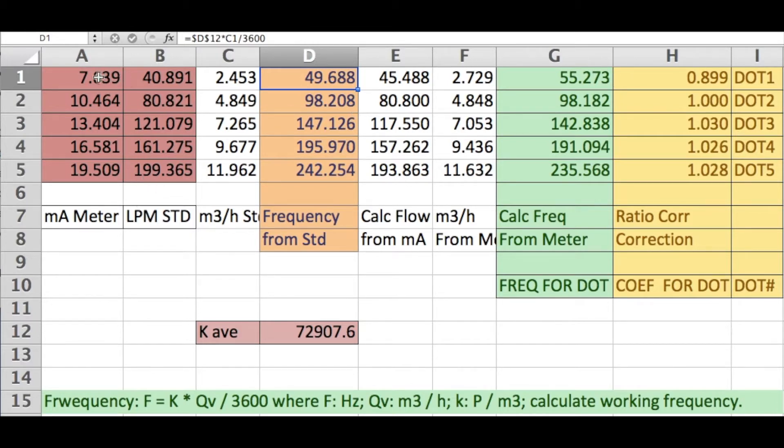What you have is you have the known flow rate from some standard. This is a NIST standard, and they created the condition of 40.891 liters per minute, which converts to cubic meters per hour, 60 times B1 over 1000. You can see up here in the number.